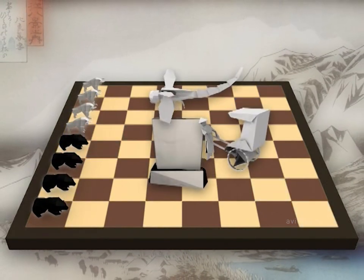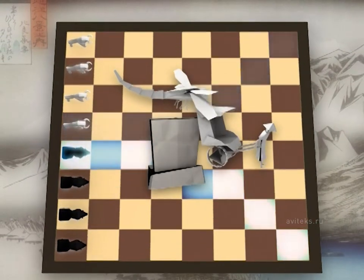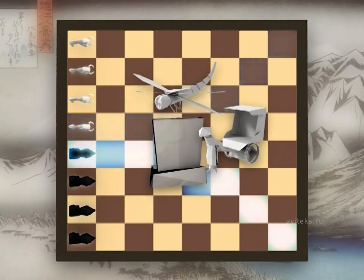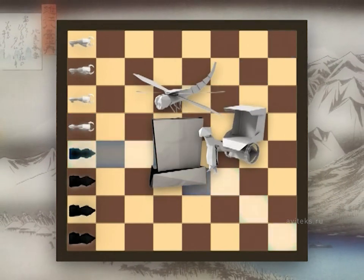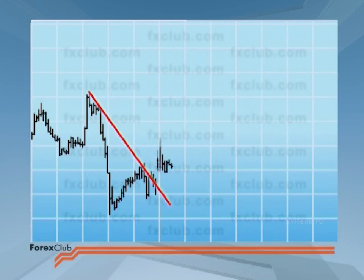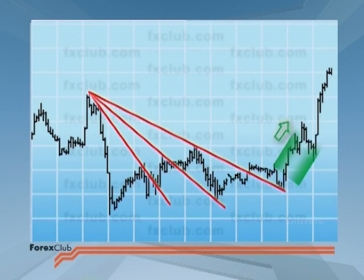The first thing to remember is that a complete trend turnaround usually occurs gradually, step by step, as the psychological state of the market changes. A reversal signal tells us there's a question mark over the future direction of price. But which way will it move? That is the question.